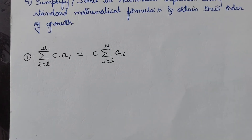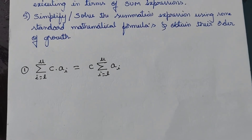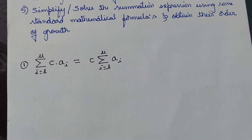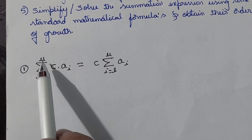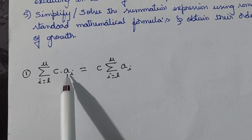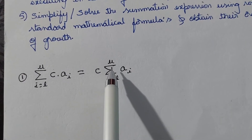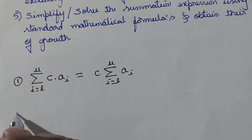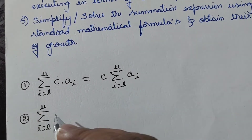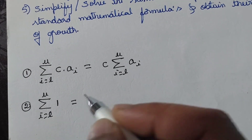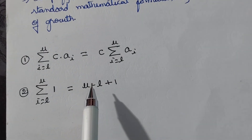In step five, we solve summation expressions using standard mathematical formulas. The first frequently used formula is: when the summand is a constant c multiplied by some varying factor, take c outside the summation. The second formula is: when the varying factor is just 1 (a constant), the summation equals the upper limit minus the lower limit plus one.